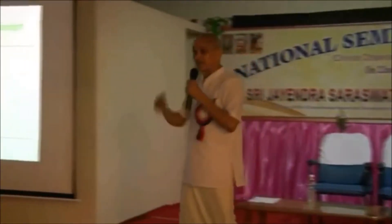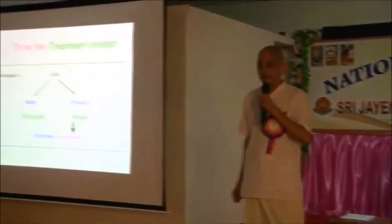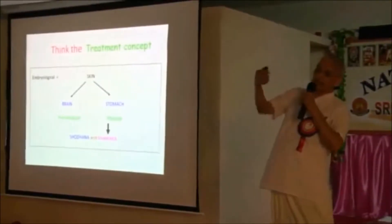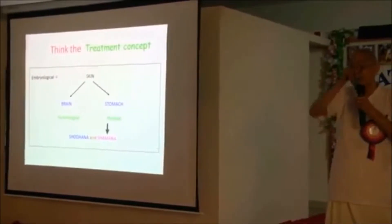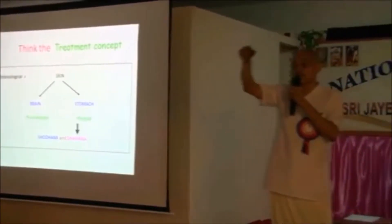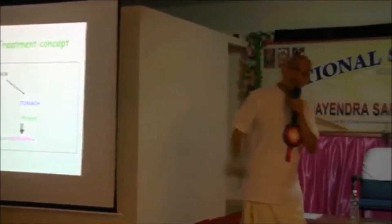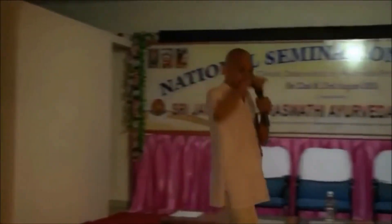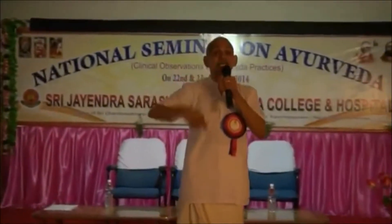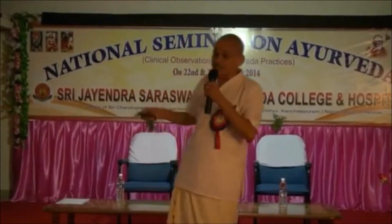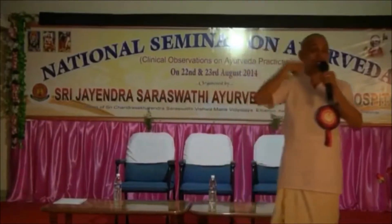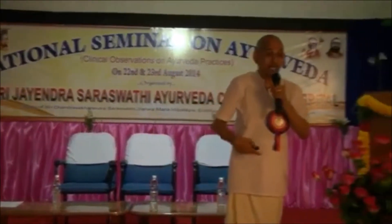The skin has epidermis and dermis. The epidermis is developed from the ectoderm, where the central nervous system is also developed. The dermis is developed from the mesoderm, where the intestine and muscular tissue develop. So the skin is very much interconnected with the central nervous system and the intestine.